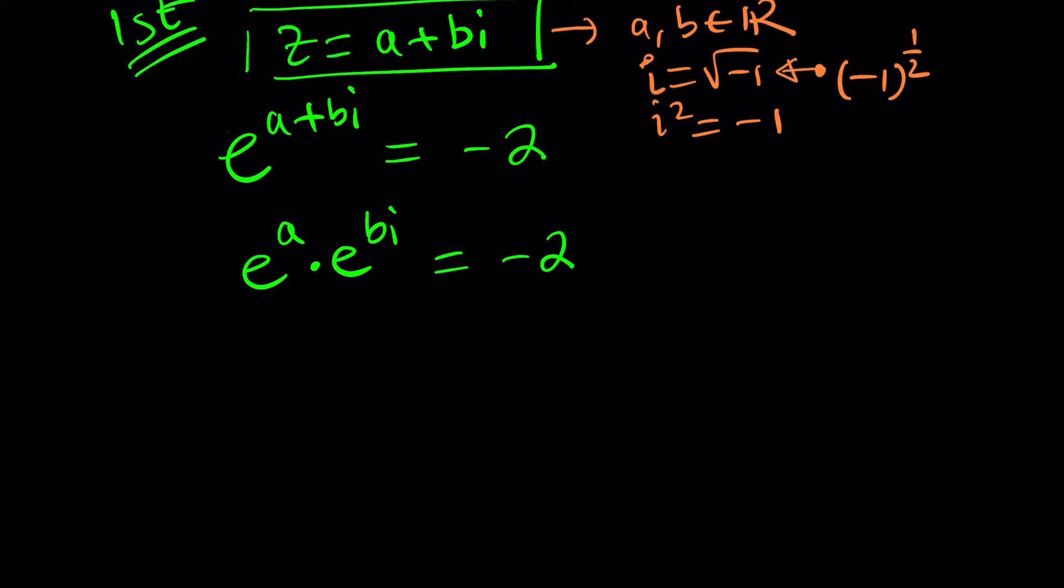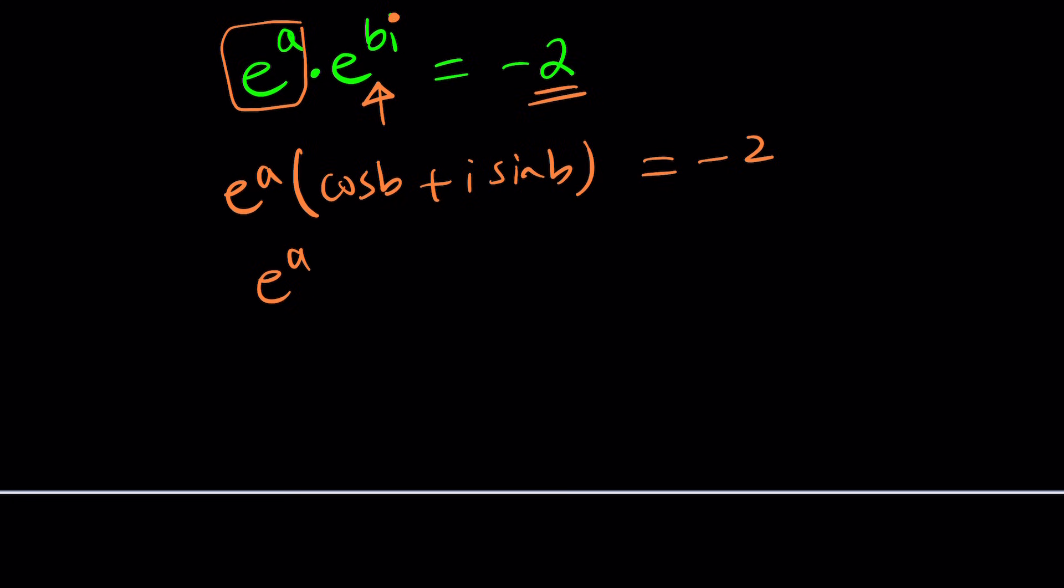Anyways, what can we derive from here? Well, first of all, since a is real, e to the power a is also real. So this is a real number multiplied by some imaginary whatever, and that gives us a real number. How is that possible? Well, depends on what e to the bi is. And by Euler's formula, if you remember, this can be written as cosine of b plus i times sine of b. And of course, without distributing, we wouldn't know what we're talking about.